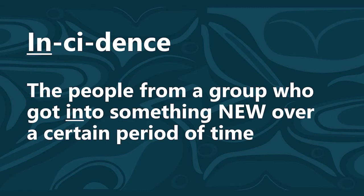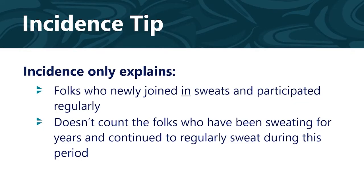It is the people from a group — in this example, from my community — who got into something new over a certain period of time; in this example, who started regularly attending ceremonial sweats in 2018. Incidence only explains the folks who newly joined in sweats and participated regularly. It does not count the folks who have been sweating for years and continued to regularly attend sweats during this time period.